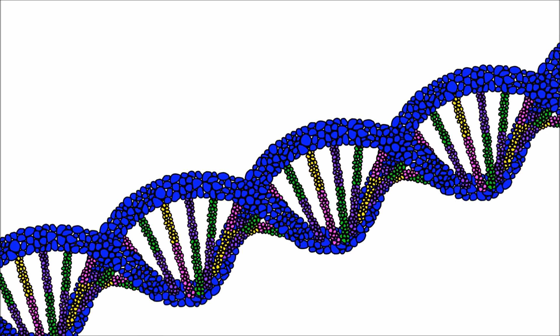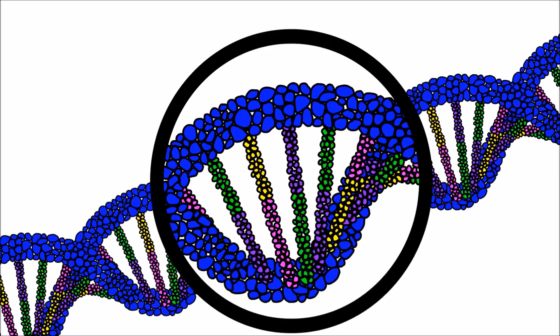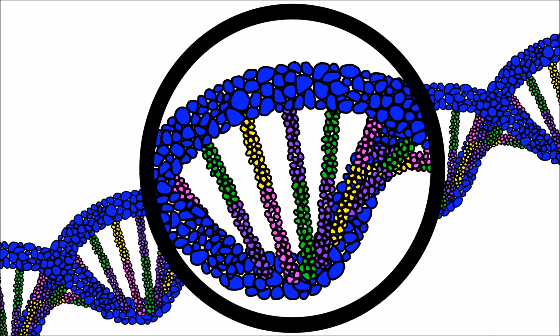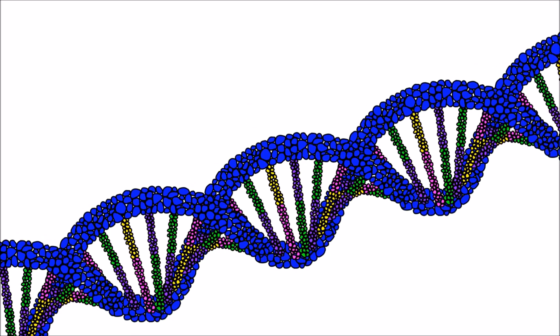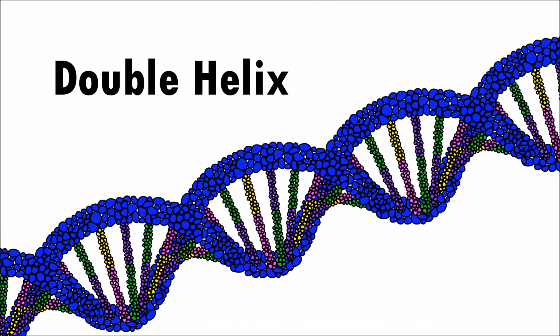It is a long, thin molecule that is made up of different atoms stuck together. The spiraling ladder shape is called a double helix.